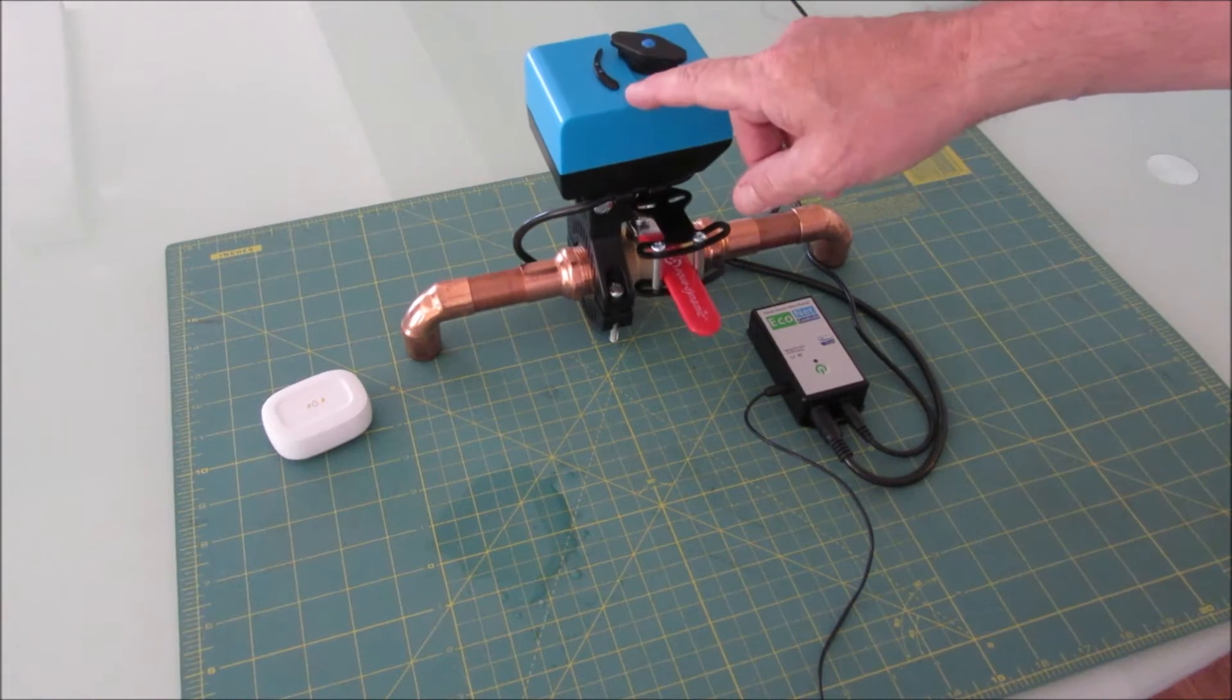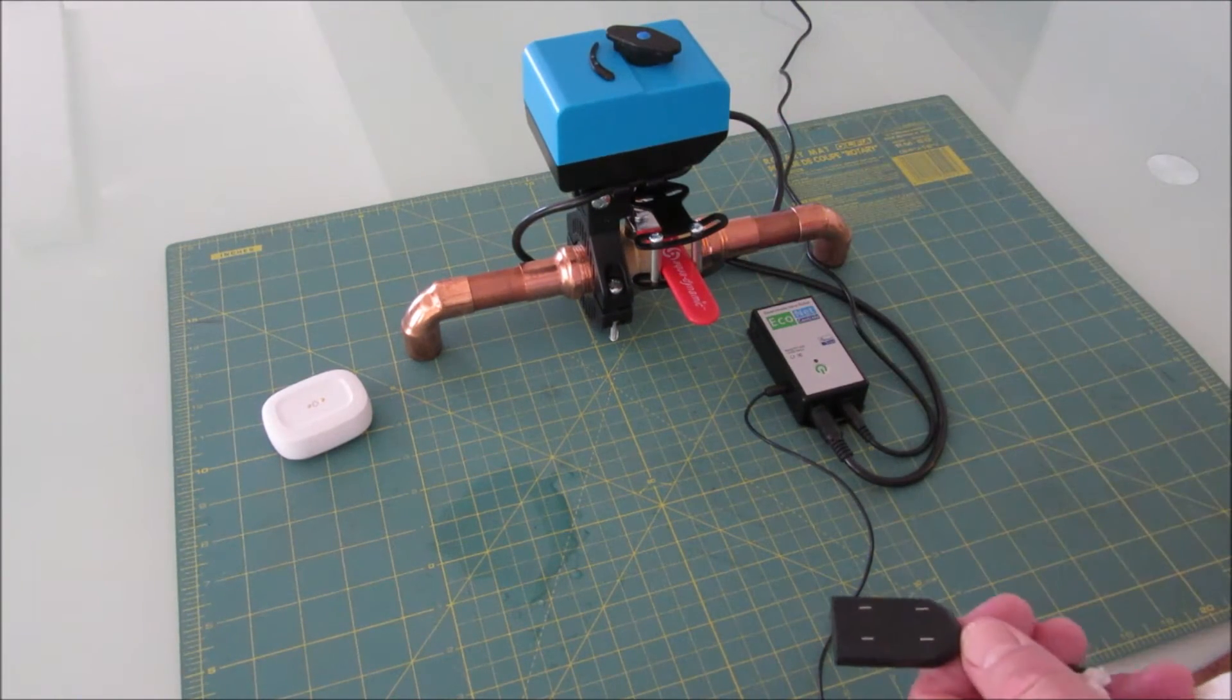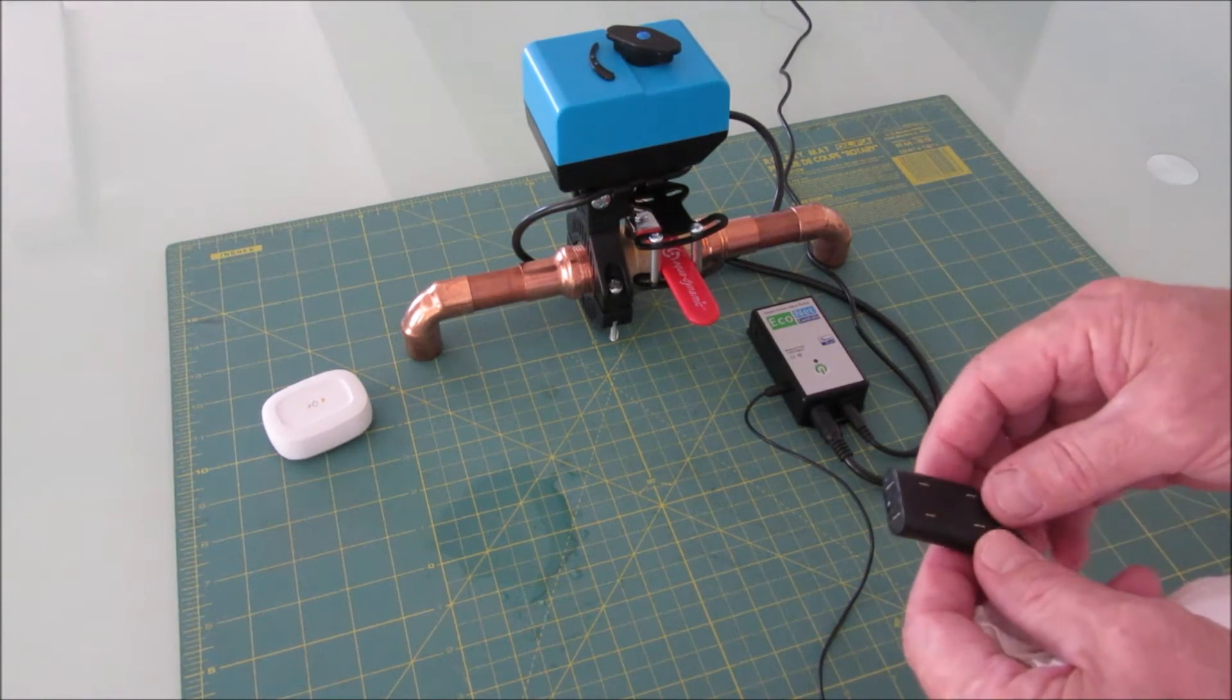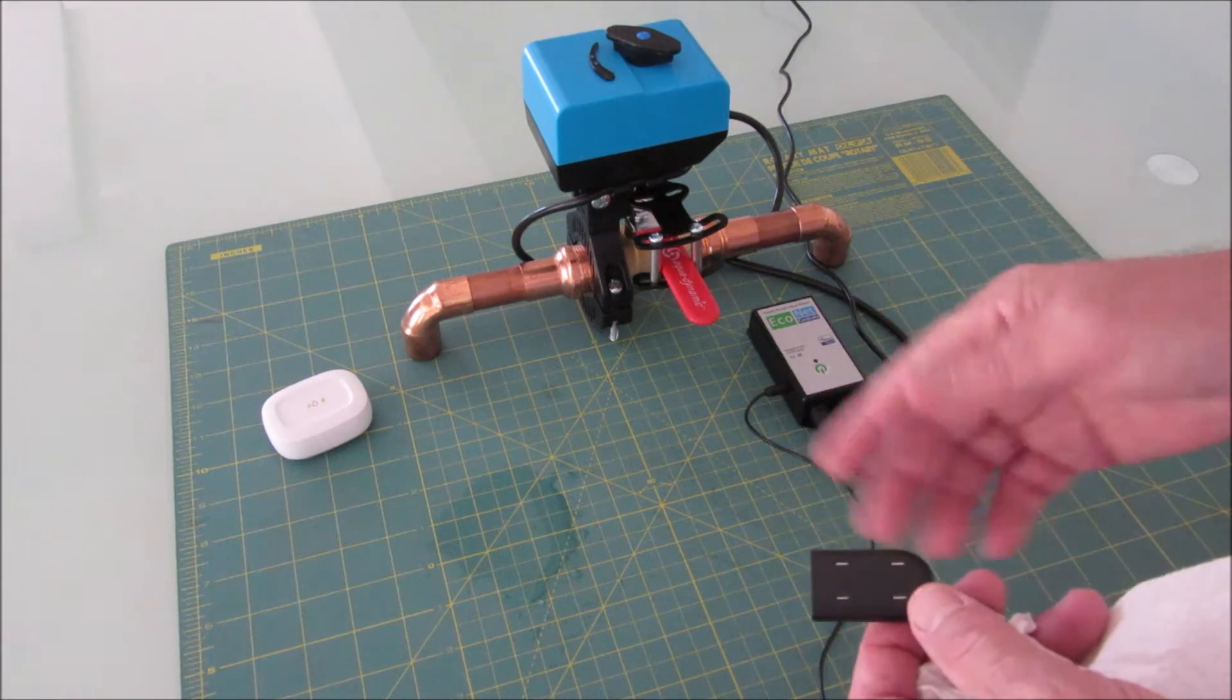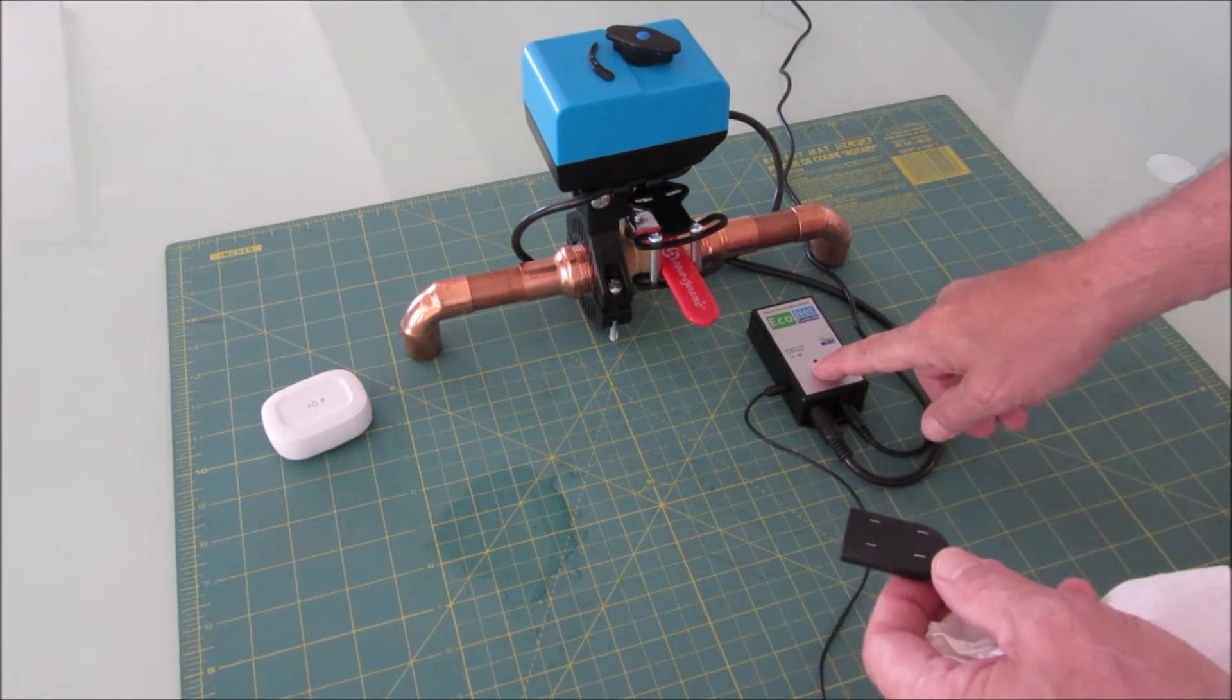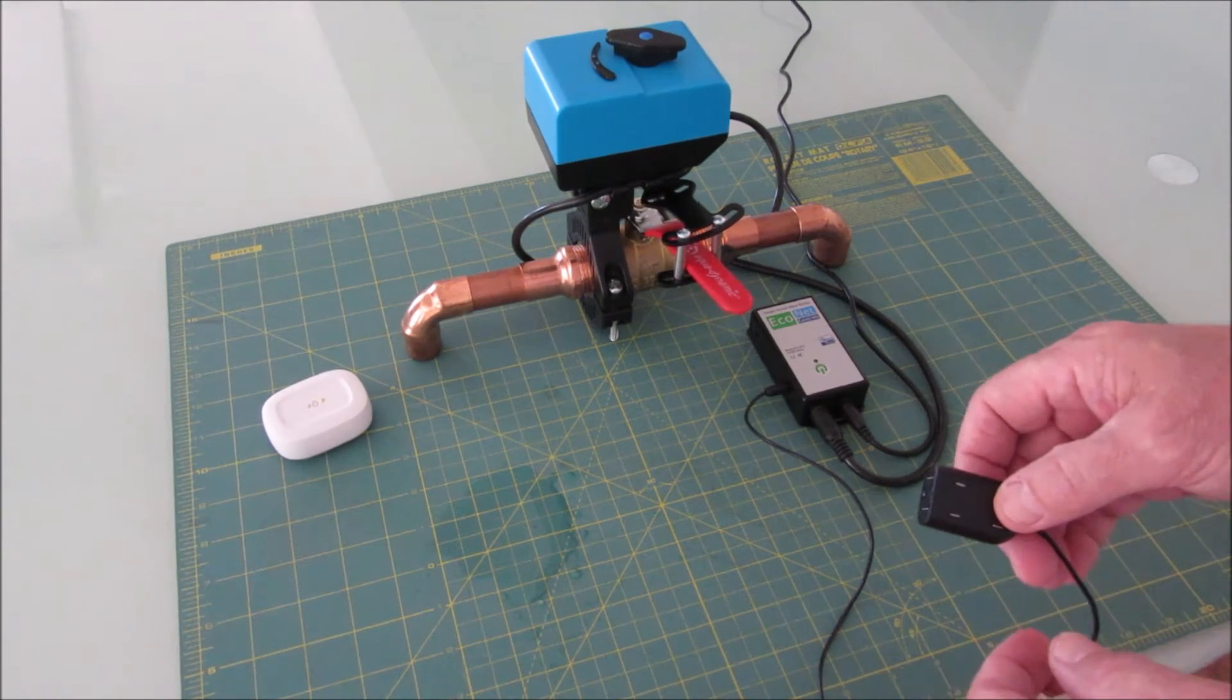That's why it's a good idea to set up a notification whenever the valve opens or closes. So you'll get your notification it's closed, you can go check it out, look for your leak, and then correct the issue. And then you can just open the valve back up by pushing the button or using your phone.